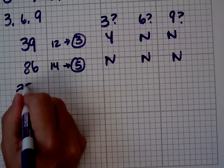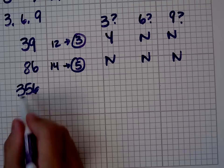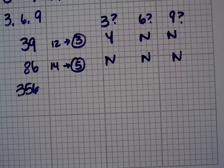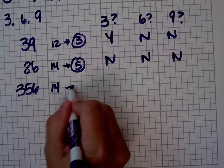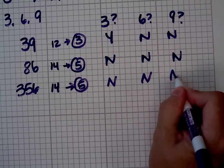How about a big number like 356? 3 plus 5 is 8. 8 plus 6 is 14. Digital root of 5. No, no, no.